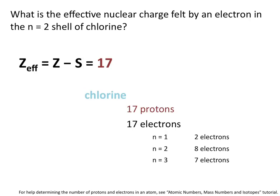Z is equal to the atomic number of chlorine, which is 17. S is the number of inner shell electrons — the inner shells being those between the shell of interest and the nucleus. Because we're looking for the effective nuclear charge felt by an electron in the n equals 2 shell, the only inner shell electrons are in the n equals 1 shell, and there are only 2 of them. This means the effective nuclear charge felt by an electron in the n equals 2 shell of chlorine is equal to 15.